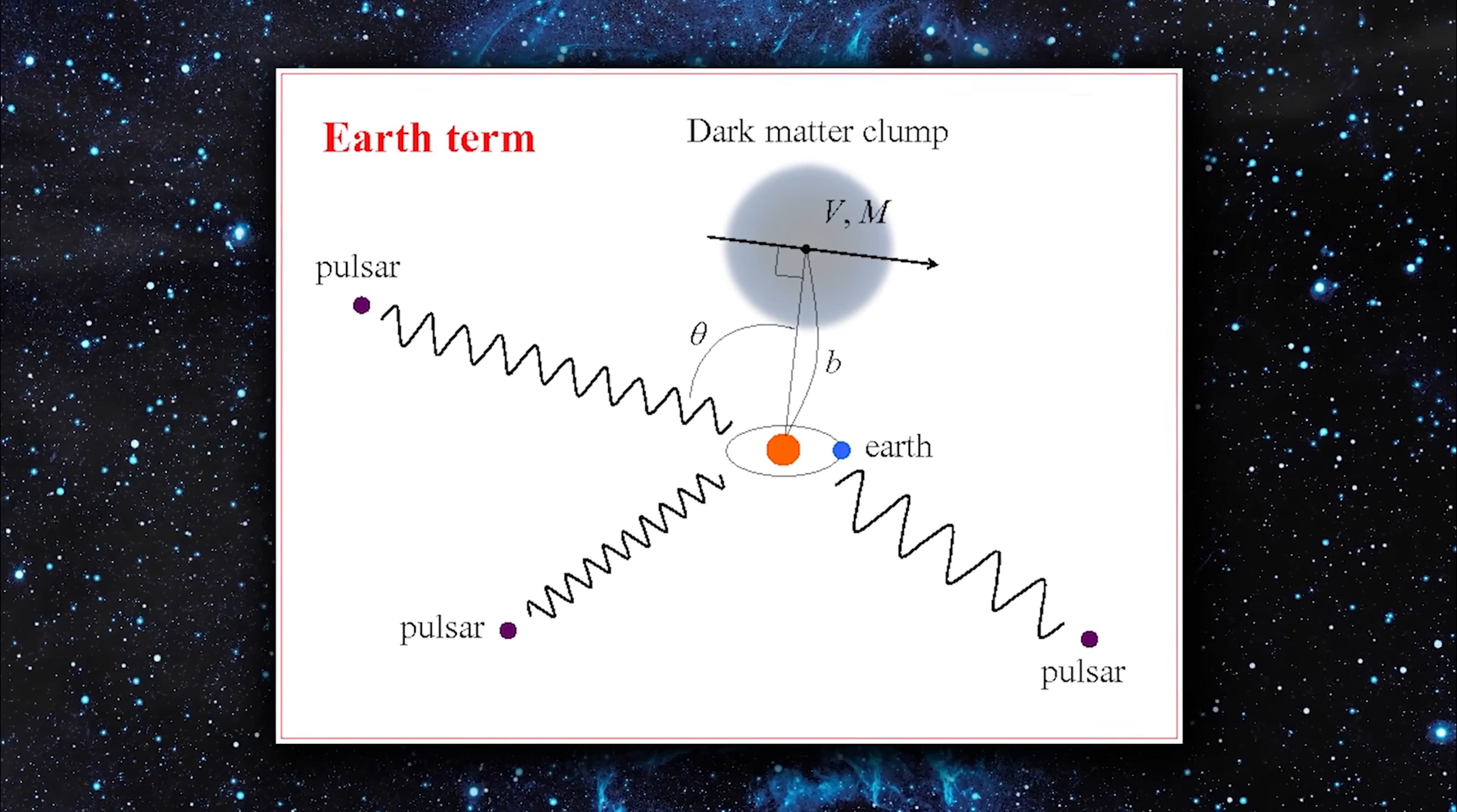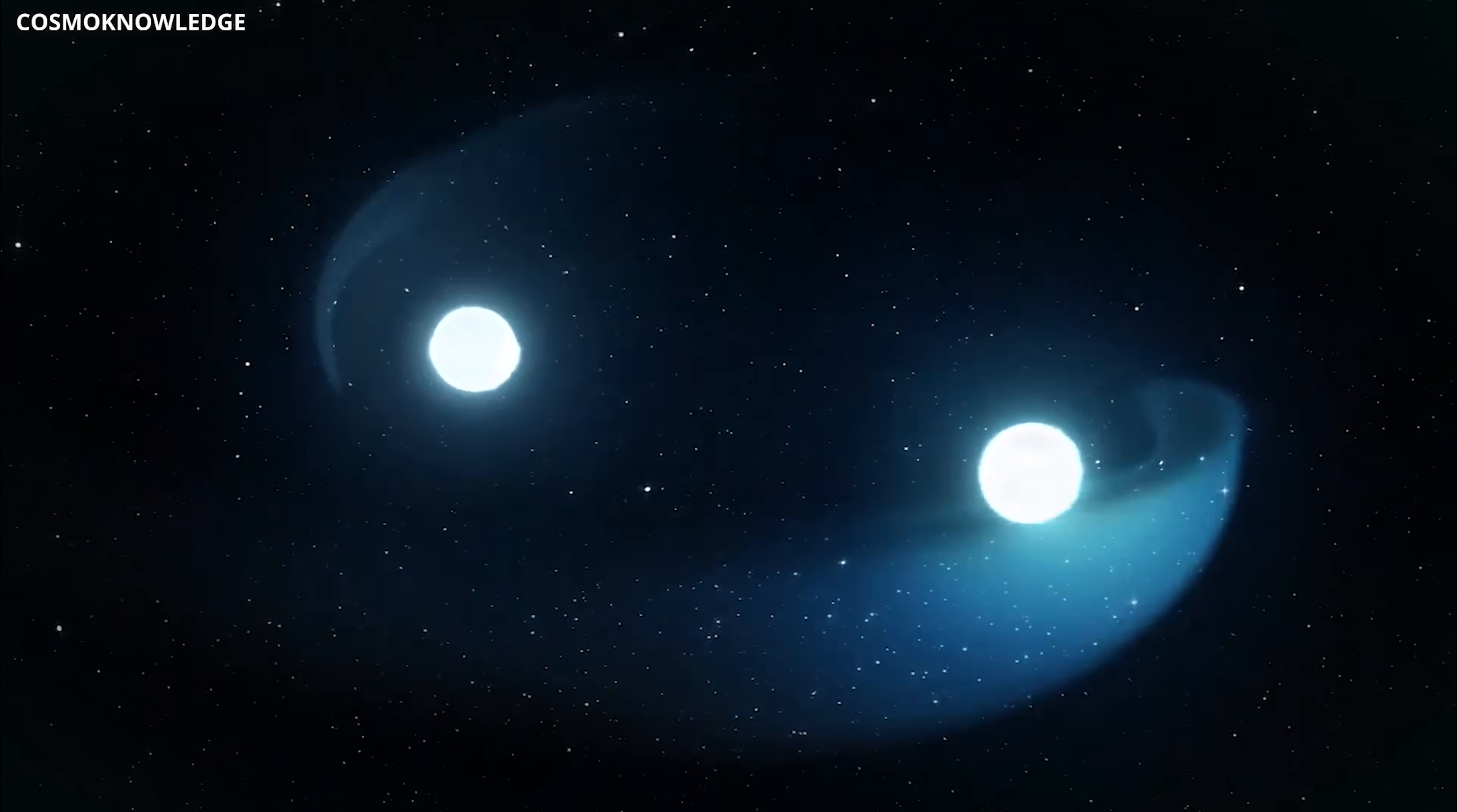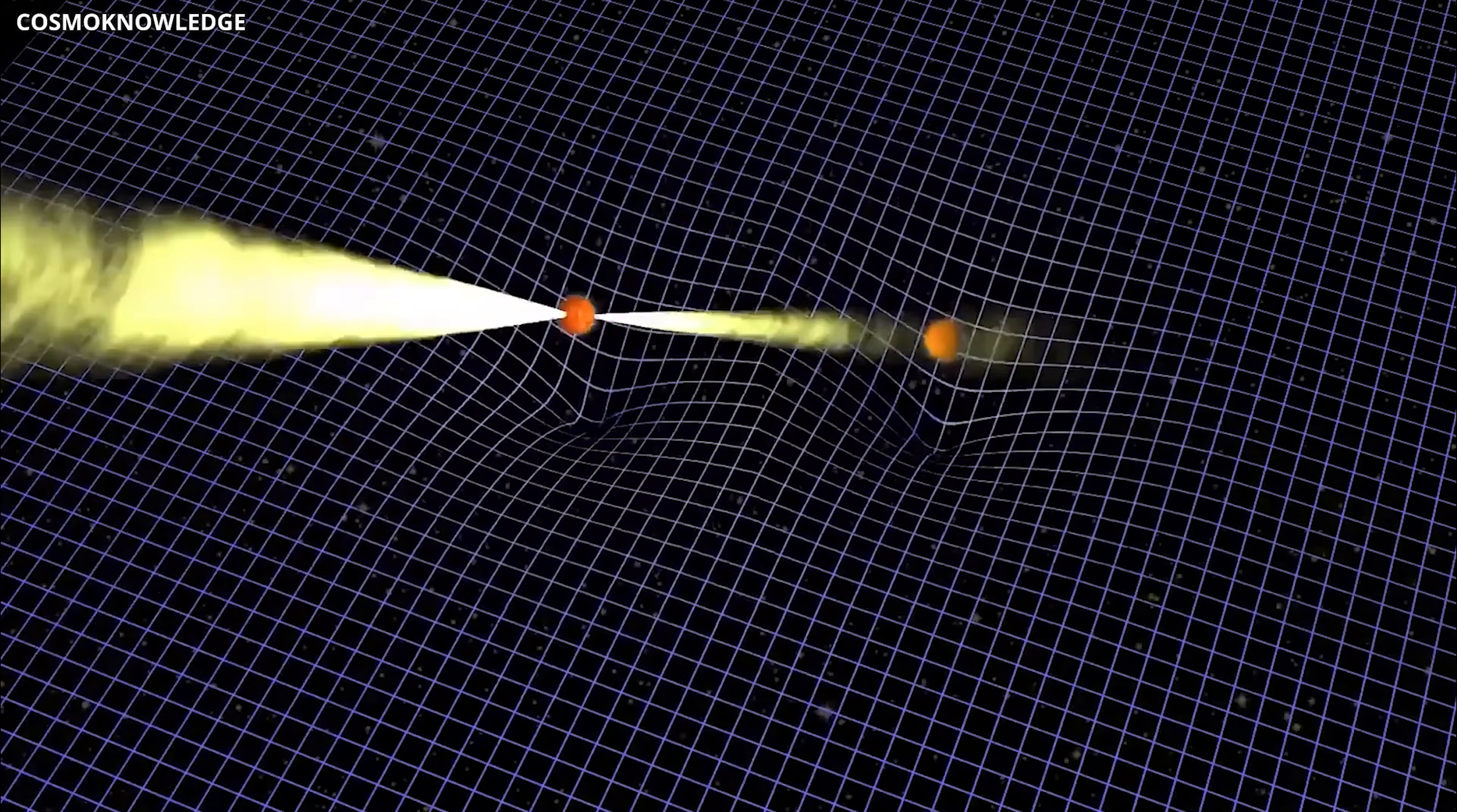After removing all of these known factors, they were left with an unexplained excess signal, a gravitational tug with no visible source. In other words, something invisible was still disturbing the pulsar's perfectly timed signals, and that something could very well be a clump of dark matter. In their analysis, the team spotted something remarkable. Two binary pulsars, PSR J-1640 and PSR J-1713, were both showing nearly identical gravitational timing shifts.